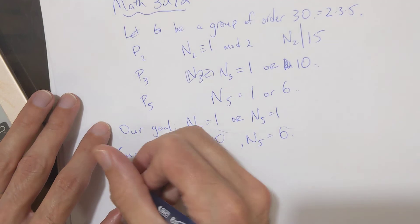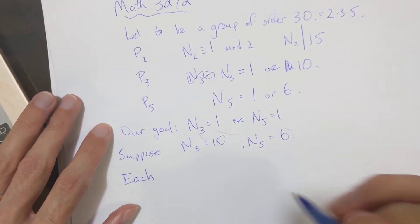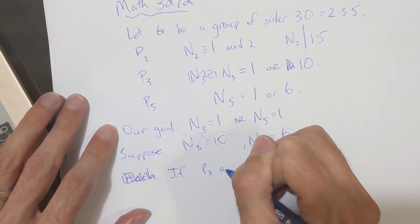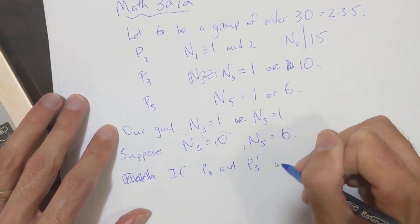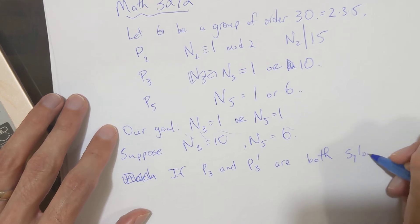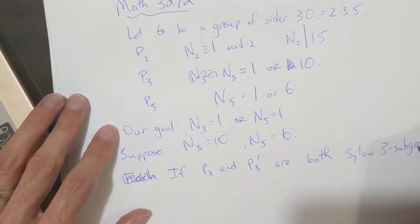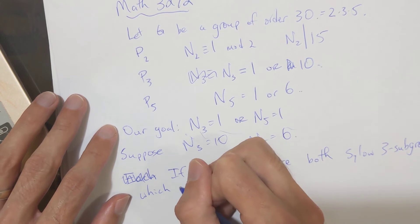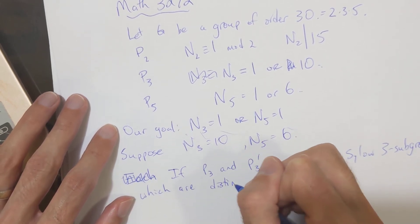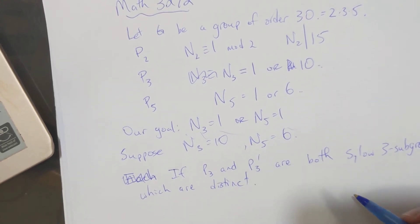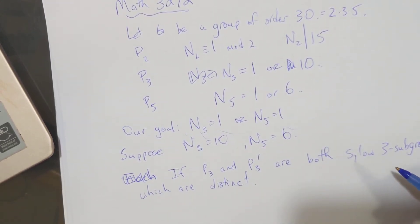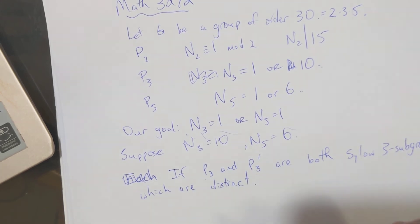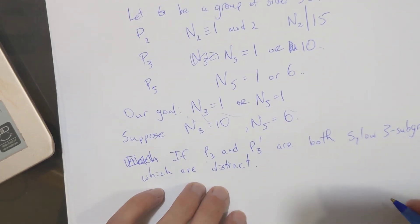Okay. So, if P3 and P3 prime are both Sylow 3 subgroups, rather, they're both distinct, let's say, which are distinct, and one thing we can say, well, they have three elements and they're different, their intersection has to be trivial, because if their intersection was not trivial, their intersection would be one of the two, so they would actually be the same.